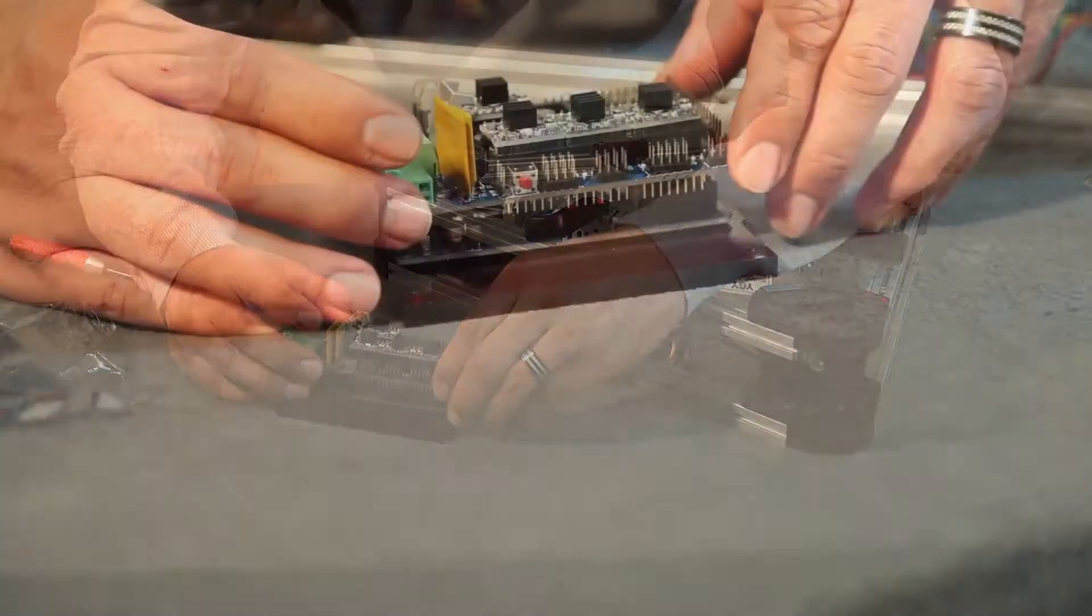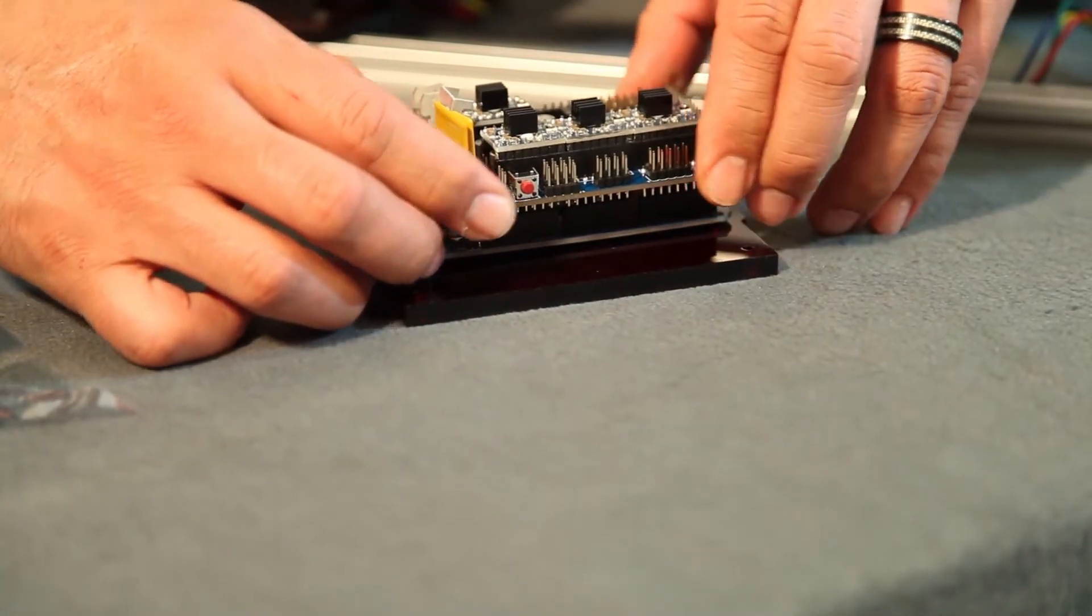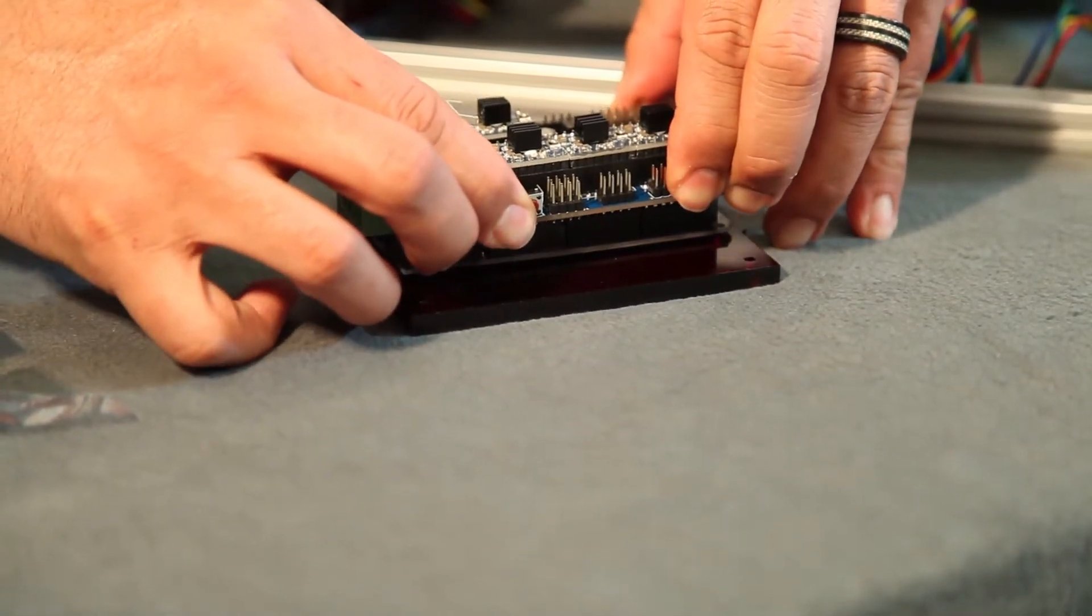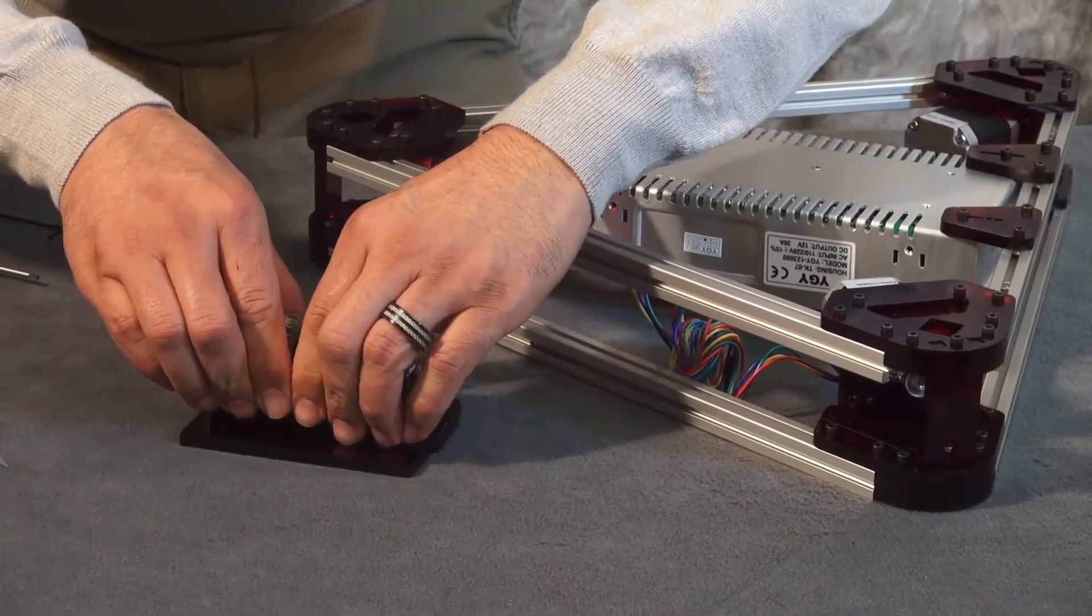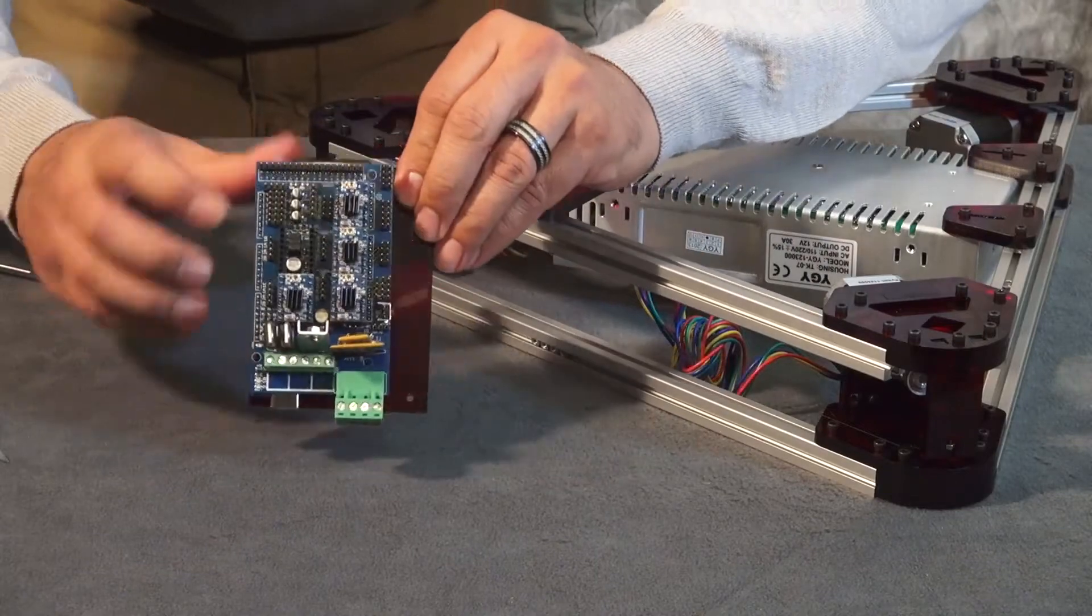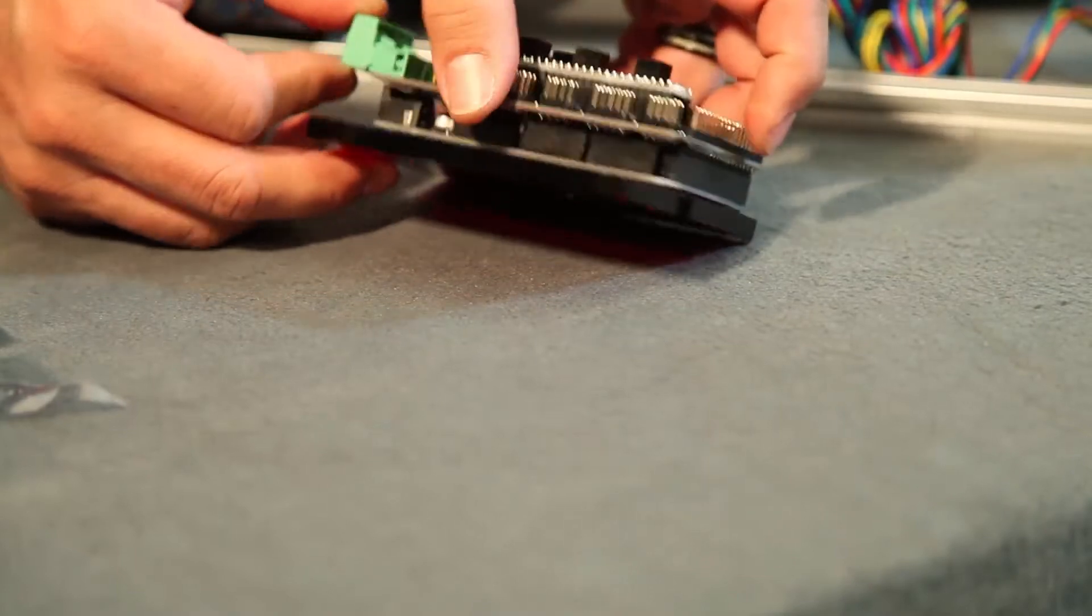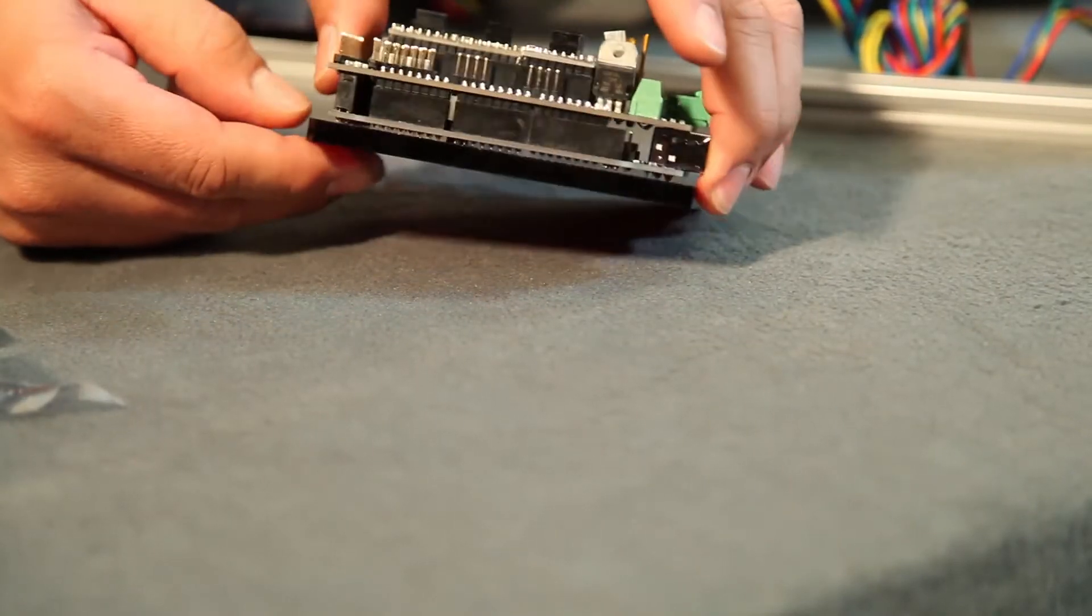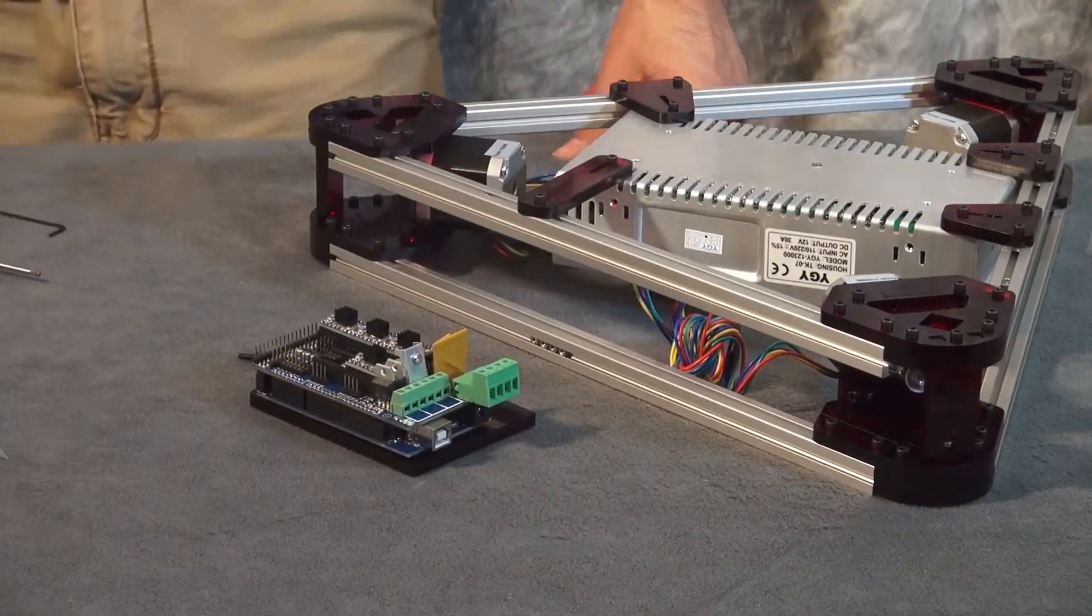Once you have them lined up, apply even pressure all the way around your board so it goes down into the pins evenly. Once you have it all the way in, just make sure it's all pressed in. You want to make sure all the pins are seated evenly and you don't have one side that's raised up.